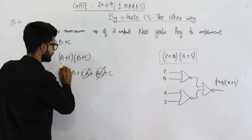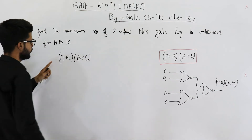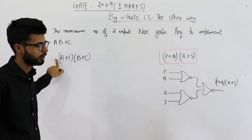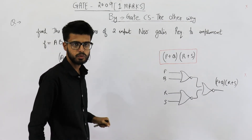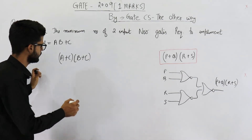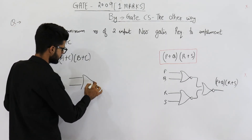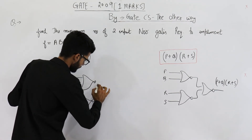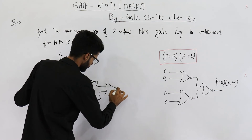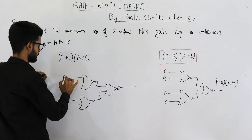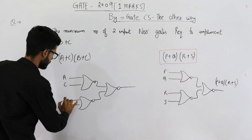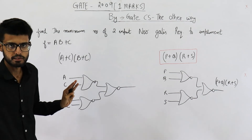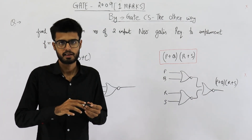So this conversion is correct. We have got the POS form. That means we have converted into this type, and it can be implemented using three NOR gates. This is A, this is C, and the next two inputs are B and C. The answer is three — three two-input NOR gates are required.